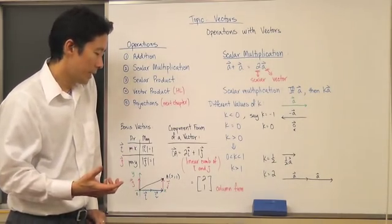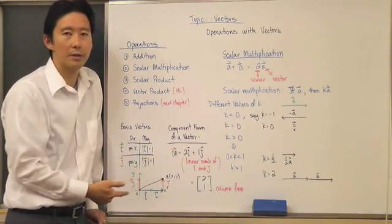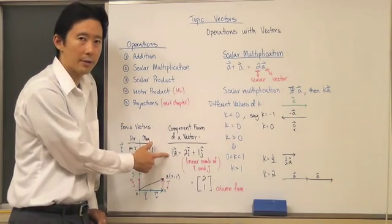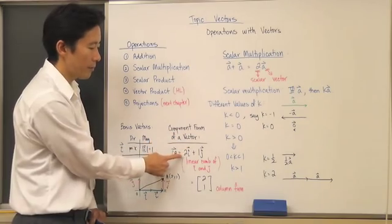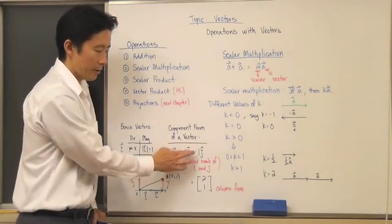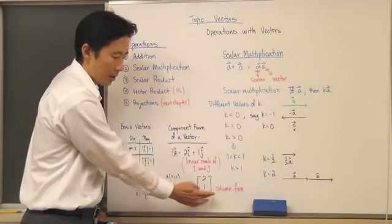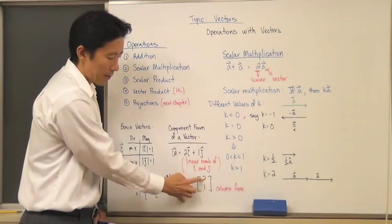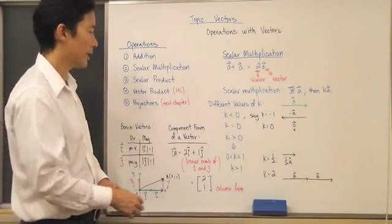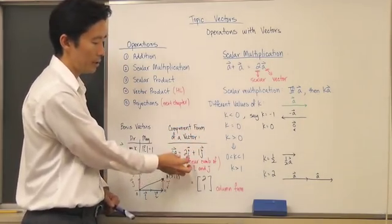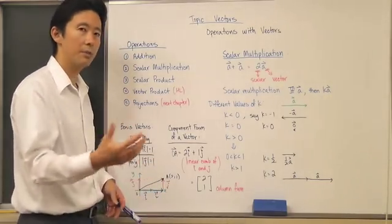Given any two points on the x-y coordinate plane, you can always find a linear combination of i and j vectors to determine the component form of that vector. There's also a very shorthand version called the column form, which is quite obvious from looking at the component form. The column form simply lists the i components and j components that make up the vector.